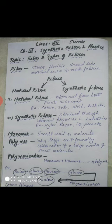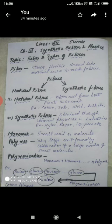Synthetic fibers are also known as human-made fibers, as they are made through different chemical processes in industries. Synthetic fibers are prepared using raw material of petroleum origin called petrochemicals. That means synthetic fibers are prepared from chemicals known as petrochemicals.